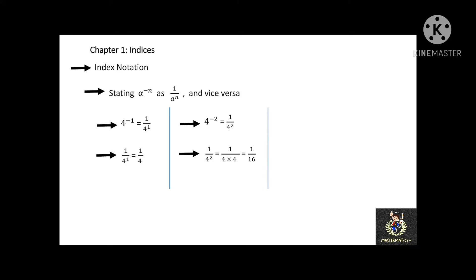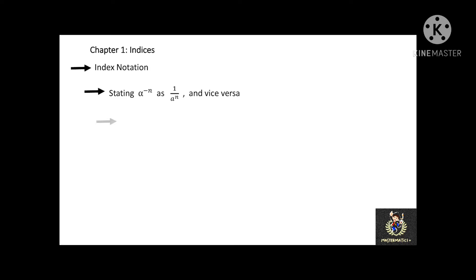And the last example: 4 to the power of negative 3 can be stated as 1 over 4 to the power of 3. To find the value of 4 to the power of negative 3: 4 to the power of 3 equals 4 times 4 times 4, which is equal to 64. Then 4 to the power of negative 3 is equal to 1 over 64.